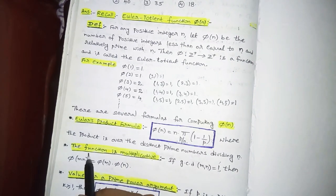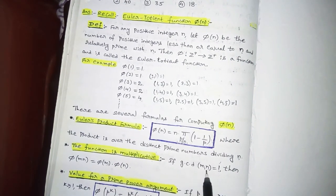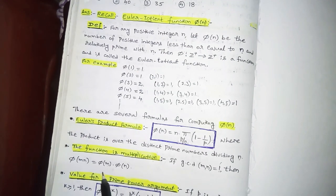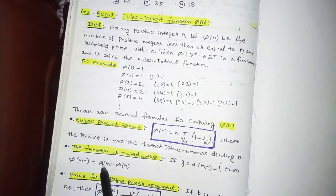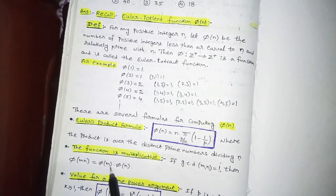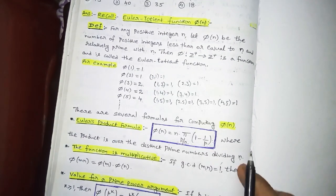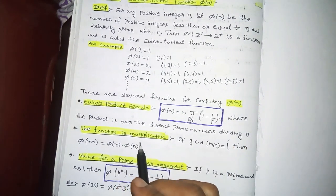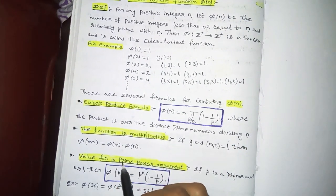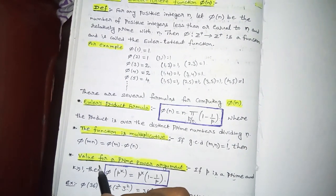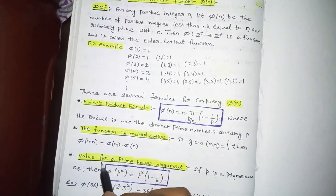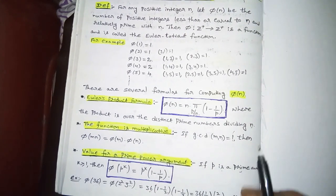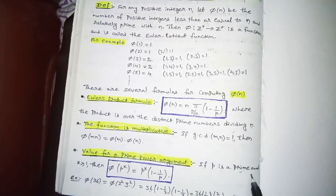The Euler Totient function φ(n) is also a multiplicative function. That is, if gcd(m, n) = 1, then φ(mn) = φ(m) × φ(n). This property is called the multiplicative function property.